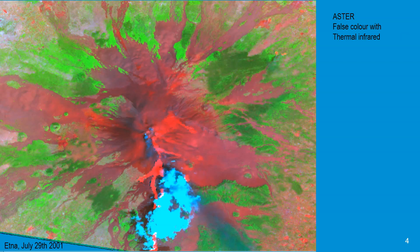Now we replace one channel with a thermal infrared band of the same satellite, and there we can clearly see that the direction of the lava flow is towards the south. This is helpful for evacuation or damage assessment.